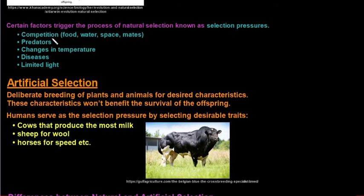Now the selection pressures that I was talking about earlier: competition such as food, water, space, and mates; there's predators; changes in temperature; diseases; and then limited light. So this is more applicable to plants.